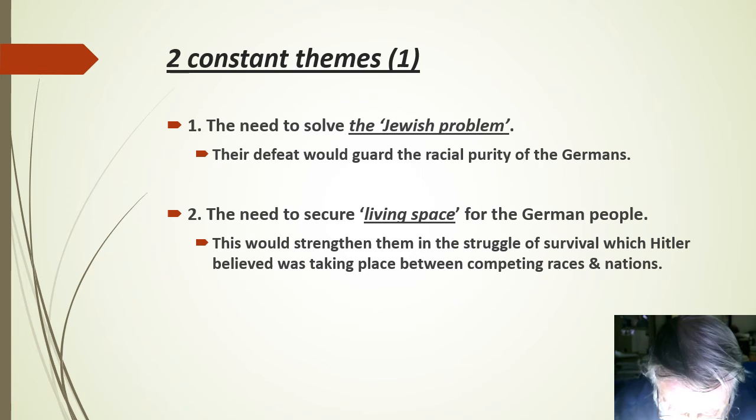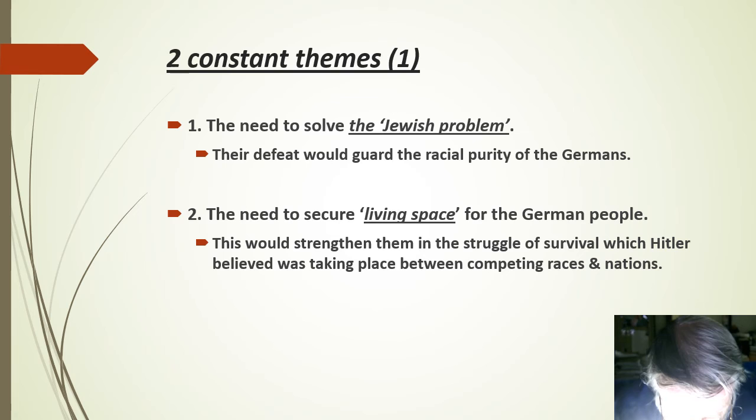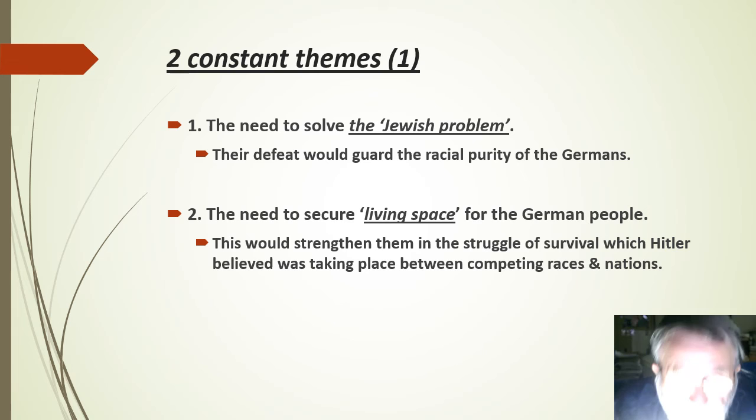In Hitler's own writings and recorded private utterances, two themes constantly recur. First, the need to solve the so-called Jewish problem. Secondly, the need to secure what's described as living space for the Germans. Defeating the Jews, according to Hitler, would guard the racial purity of the Germans. Establishing a living space, according to him, would strengthen them in the struggle for survival, which he believed was taking place between competing races and nations.